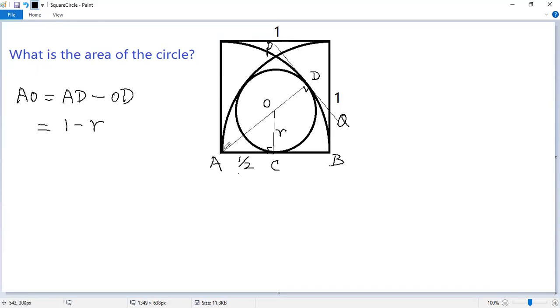So using Pythagorean theorem, we get ao squared equals ac squared plus oc squared. So we get (1-r) squared equals (1/2) squared plus oc, which is r squared.